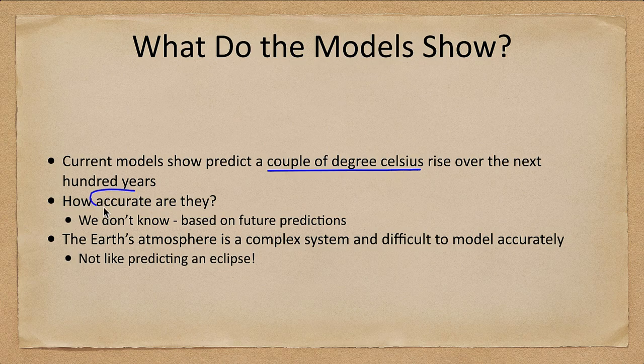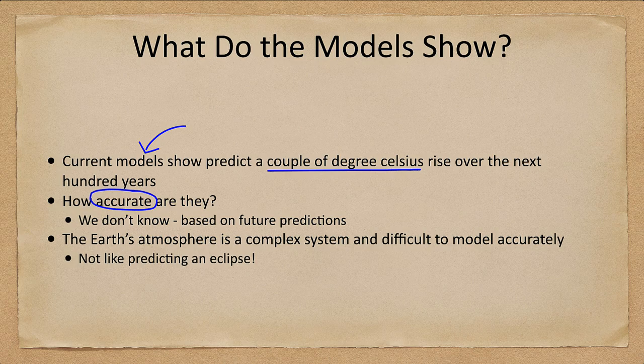The question is how accurate are these models. A model is a simplification of the real world — we can't model the Earth precisely; it's just not possible to model such a complex system, so models do have to make simplifications and assumptions. We can't tell you how accurate they are because they're based on future predictions. We'd have to wait a couple hundred years to judge how accurate the models were.